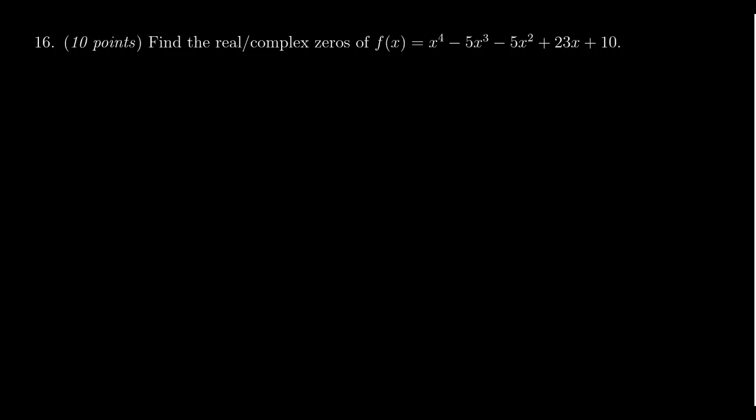The first thing I always recommend when working with these is to consider the rational roots theorem and what are the possible rational roots. So p over q could equal, looking at the constant term and dividing it by the leading coefficient. The leading coefficient is just 1 here, so we only have to look at divisors of 10. So we're going to have plus or minus 1, plus or minus 2, plus or minus 5, and plus or minus 10.